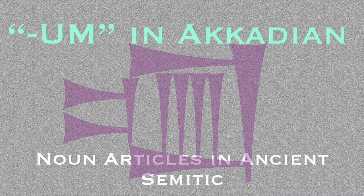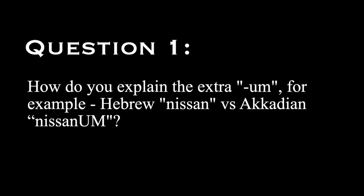I got a few questions in our comments section recently, and I thought it'd be a good time to discuss nouns in Akkadian — a basic feature that we don't really see in other Semitic languages, or maybe not so much. The questions are these, and they should both get answered through this little video. First one is: how do you explain the extra 'um'? For example, Hebrew 'nisan' is in Akkadian 'nisanum.' What's the deal with that 'um'?